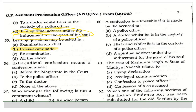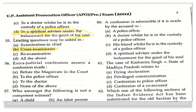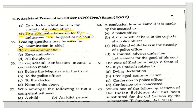The next question asks: what is an extrajudicial confession? The options are: a confession made before the magistrate, in court, to a police officer, to a doctor, or none of the above. An extrajudicial confession means one not made before a magistrate or police officer, so the correct answer is a confession made to a doctor.